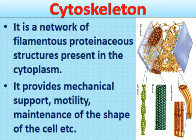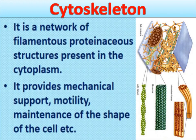The next cell organelle is the cytoskeleton. The cytoskeleton is a network of filamentous proteinaceous structures present in the cytoplasm. Many filaments form a network and these filaments are made up of protein. In the diagram, a network-like structure is visible, with many filaments — shown in brown — forming this network.